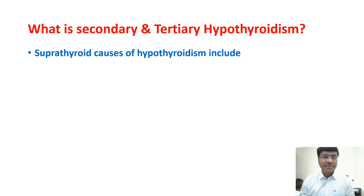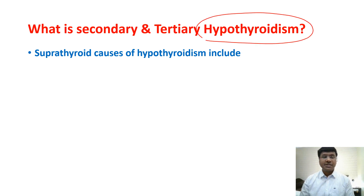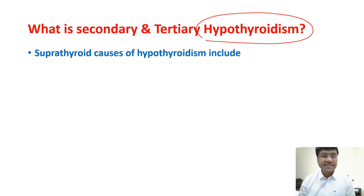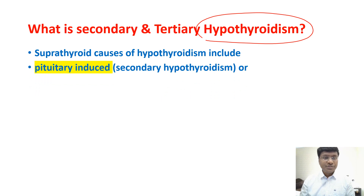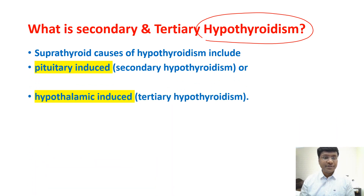You need to understand secondary and tertiary hypothyroidism. Secondary hypothyroidism means the pathology is at the level of the anterior pituitary gland, where there is a decrease in TSH. Tertiary hypothyroidism means the pathology is at the level of the hypothalamus, where there is a decrease in thyroid-releasing hormone. Pituitary-induced hypothyroidism is secondary; hypothalamic-induced hypothyroidism is tertiary.